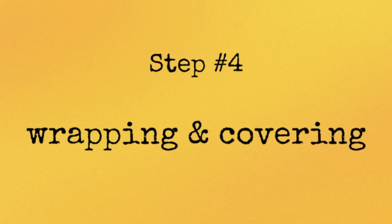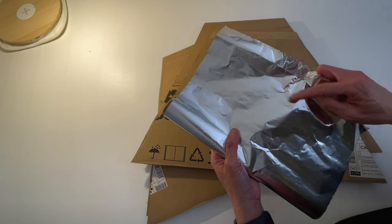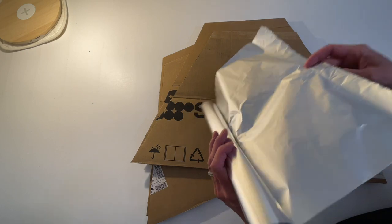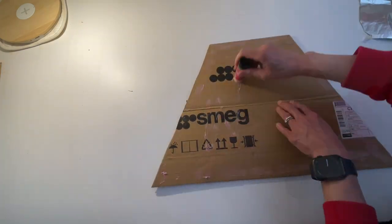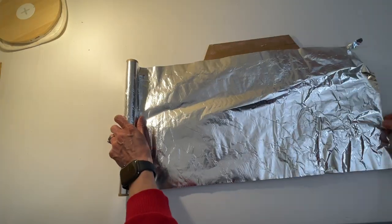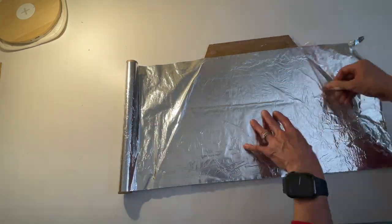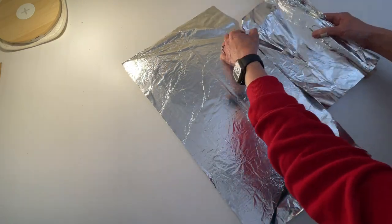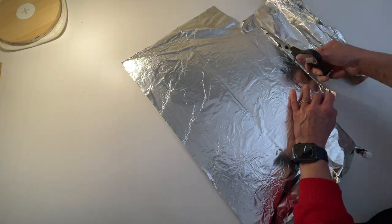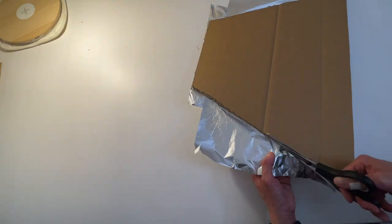Step number four: wrapping and covering. First of all, wrap the four panels with foil. Make sure the shiny side is facing you. Apply some glue on the cardboard and stick the foil onto it. Then cut out the excess using a pair of scissors, just like this.